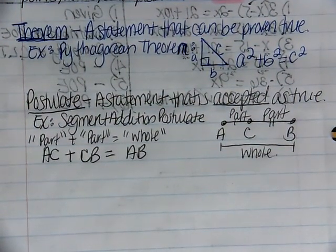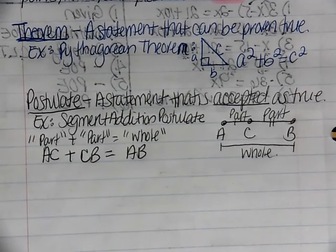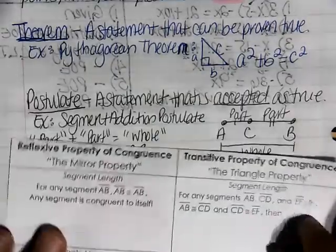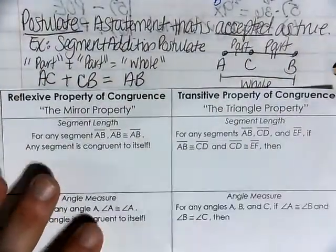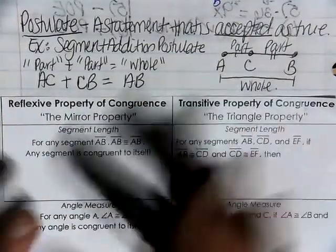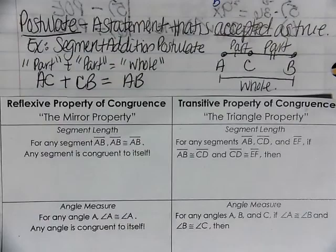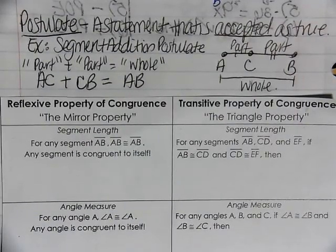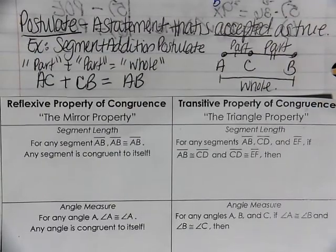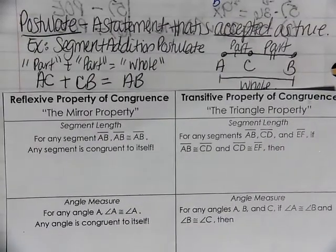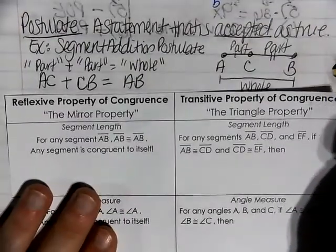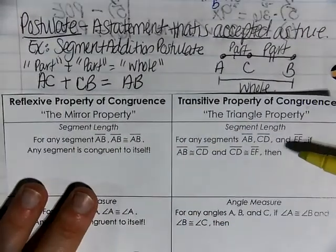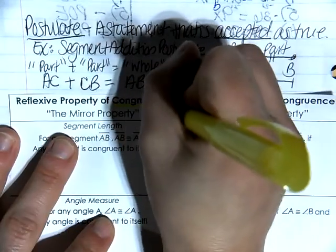That is considered a postulate. A property is a characteristic of a geometric figure. We have a couple of properties to discuss. Take out your cutouts for the reflexive property of congruence and the transitive property of congruence. Our last lesson, we were talking about the reflexive property of equality and the transitive property of equality. Now the word that is different is congruence — both of these deal with congruence.